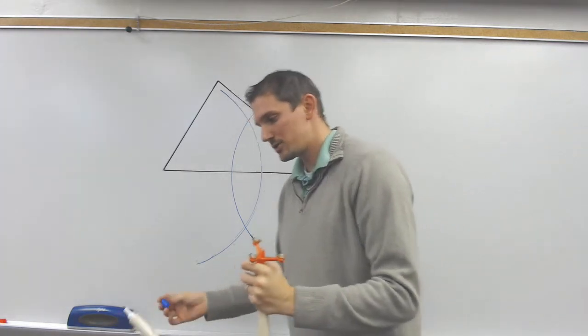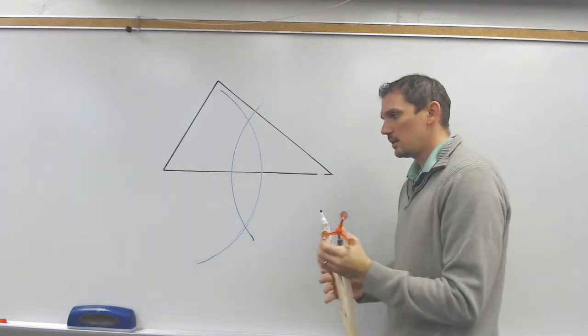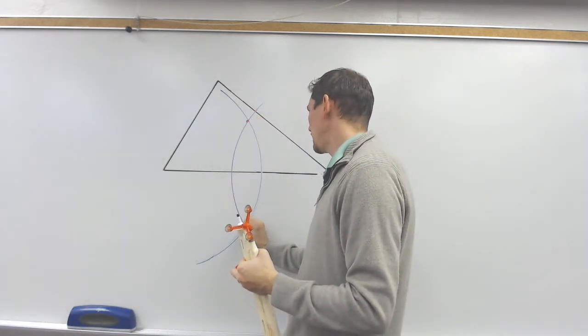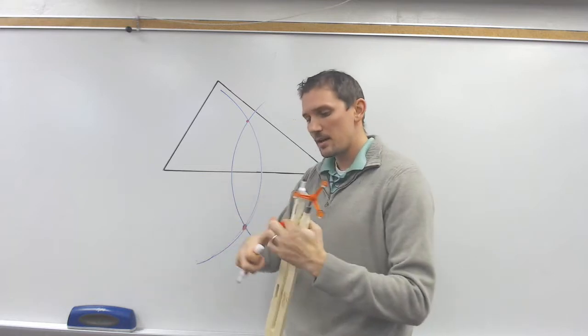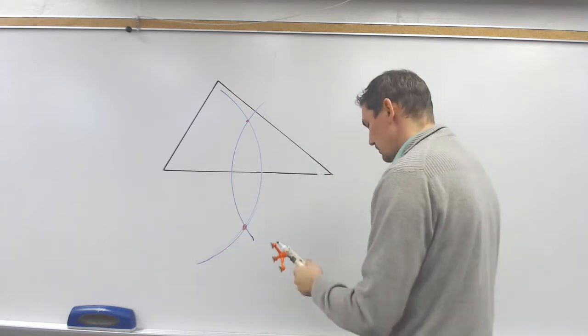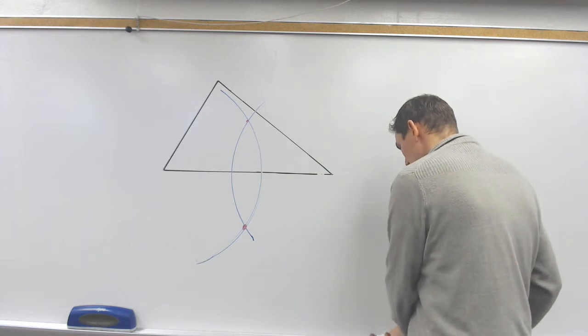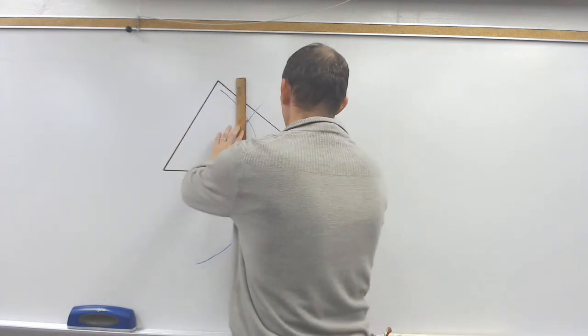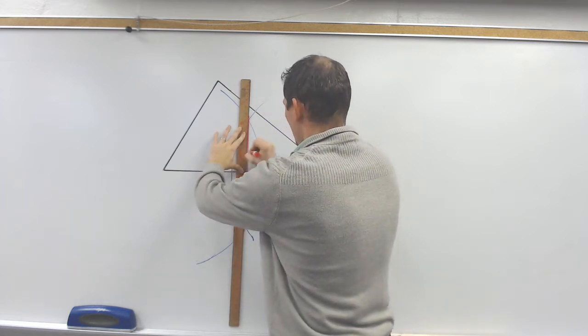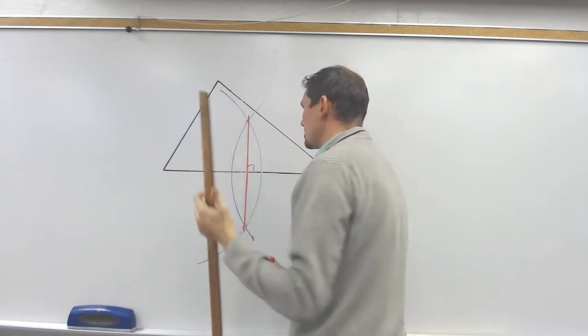After I have those two arcs, then I can connect them using a straight edge here and here, those two intersection points. That would be where I can connect the dots to be able to get the perpendicular bisector. So I'm going to do that right now. I'm going to connect those two dots, and we got the perpendicular bisector right there.